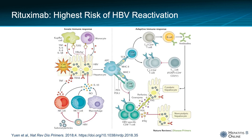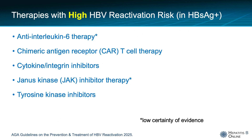Of these, rituximab or anti-CD20 therapies deserve special mention. These and similar B-cell depleting agents carry a particularly high risk of HPV reactivation in both patients who have chronic infection as well as those who have resolved infection. It was through increasing reports of HPV reactivation with these agents that we learned the key role B-cells have in control of hepatitis B infection. The risk of HPV reactivation is serious enough to warrant a black box warning for this complication, and anyone who uses these medications needs to be aware of this risk. Additional therapies that confer high risk in those with chronic infection include various other agents, some of which are associated with lower certainty of evidence.